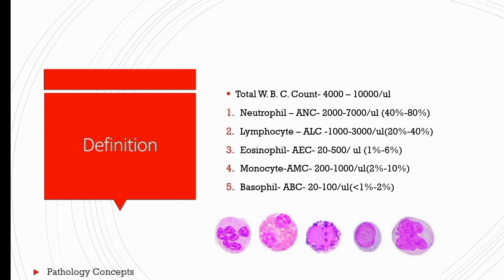Neutrophil: absolute neutrophil count is 2,000 to 7,000 per microliter. Lymphocyte: absolute lymphocyte count is 1,000 to 3,000 per microliter. Eosinophil: absolute eosinophil count is 20 to 500 per microliter. Monocyte: absolute monocyte count is 200 to 1,000 per microliter. Basophil: absolute basophil count is 20 to 100 per microliter.